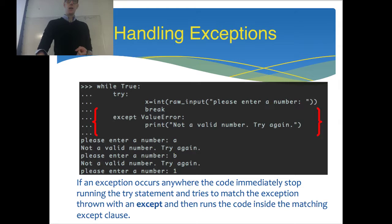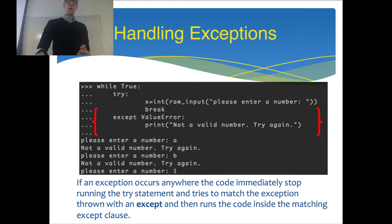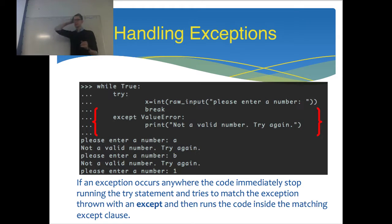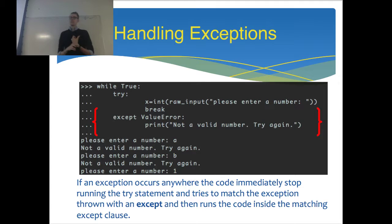So if we try an 'A', the ValueError will be thrown, it'll go to the except block handling ValueError, it'll print that it's not a valid number, go back to the top of the while loop and try again. If we enter a 'B', it's going to do the same. Once we enter a 1 or a valid number, it will successfully convert it to an integer, hit the break statement, and the code will finish. So it's going to keep asking again and again while a ValueError is thrown.